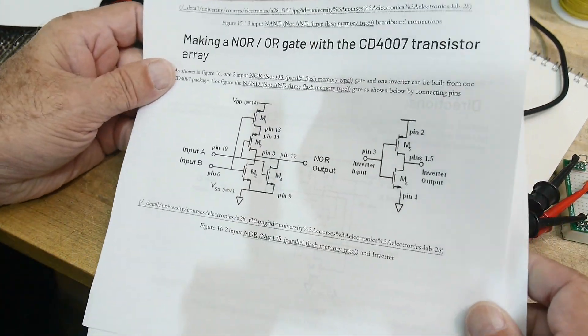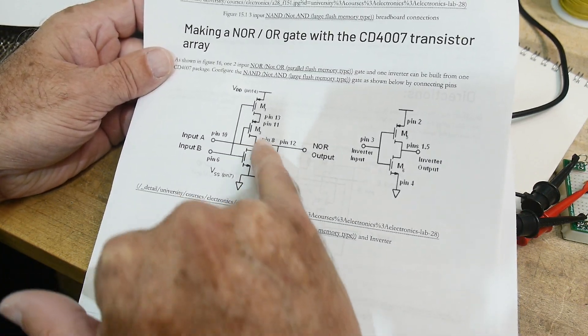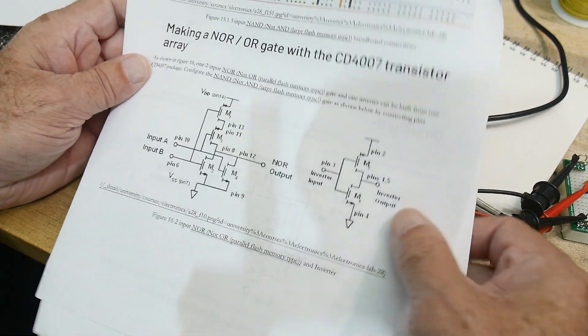Here is a NOR gate. So we see how we have two transistors. Either one can pull this low. So this is an OR function and an inverter.